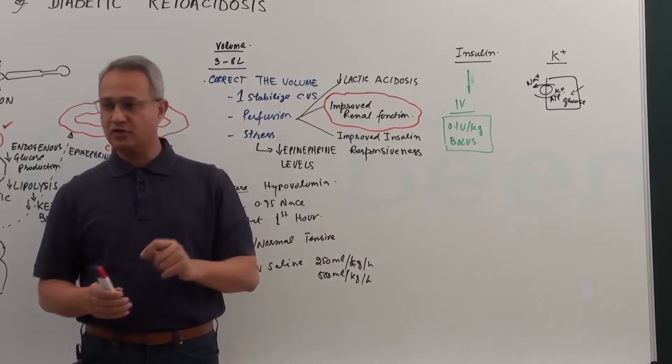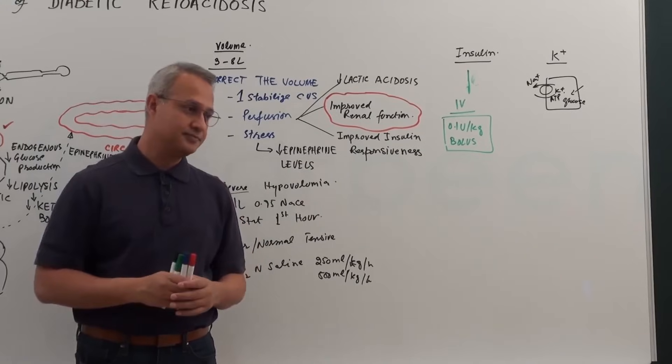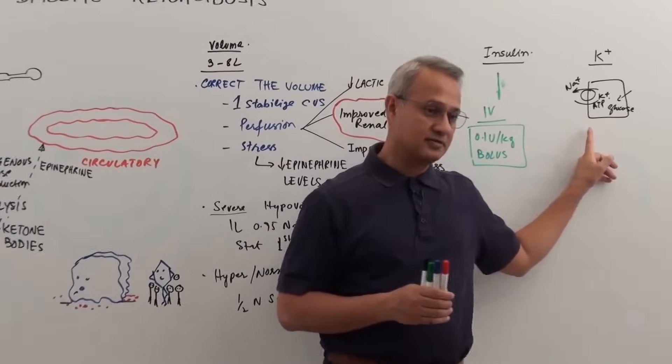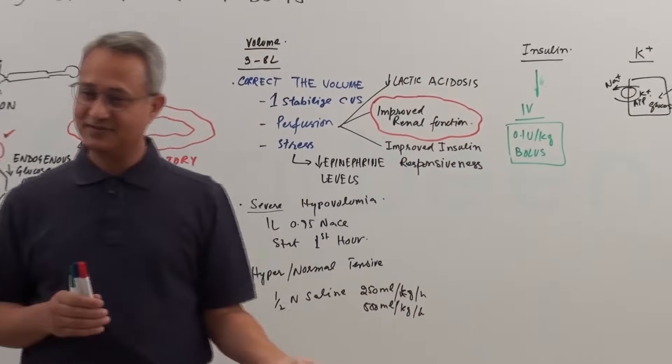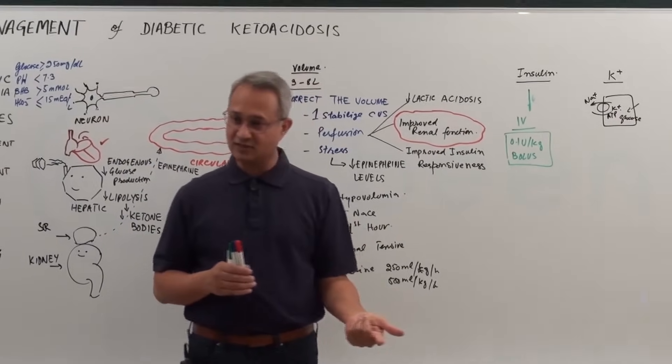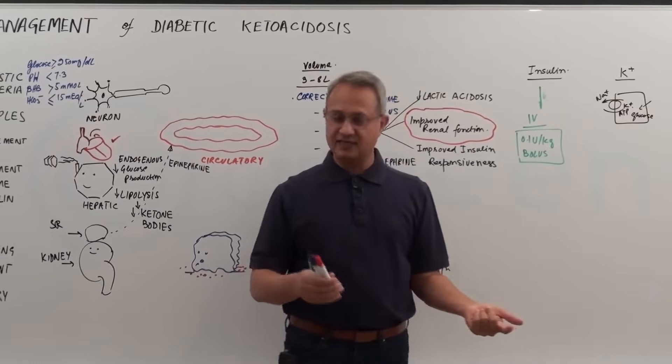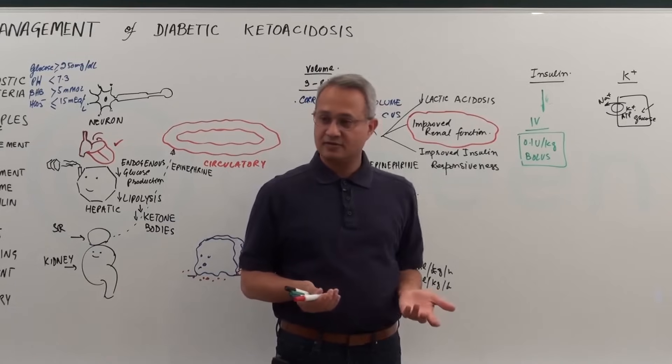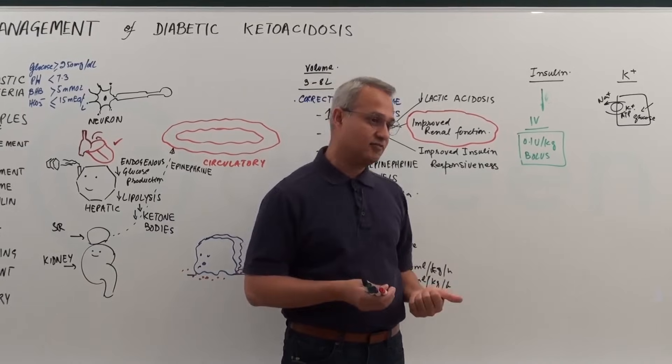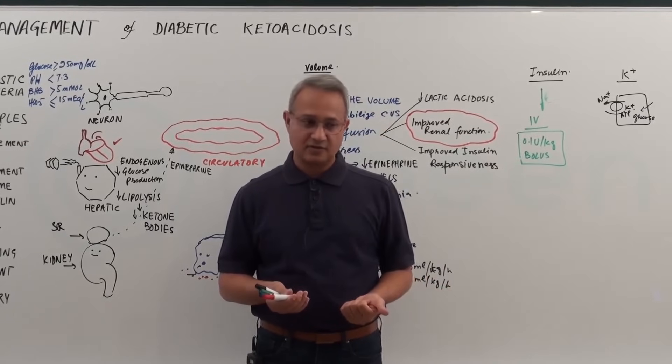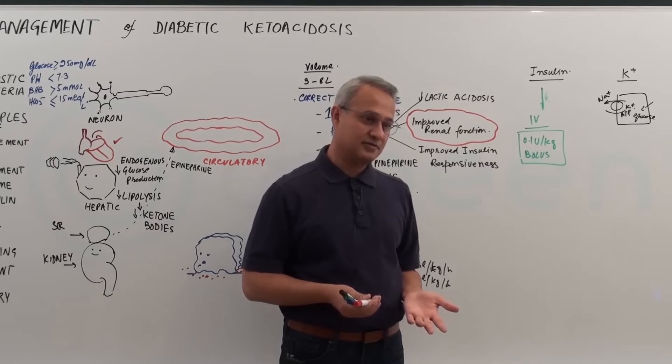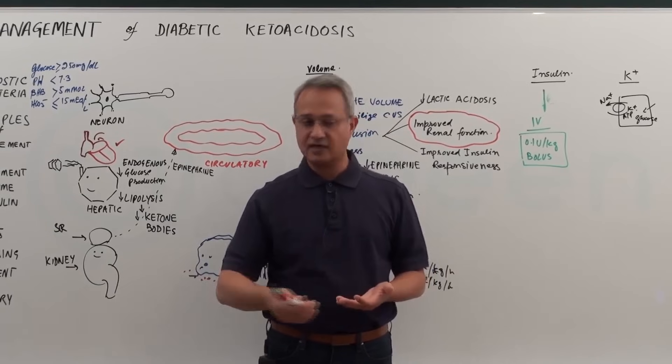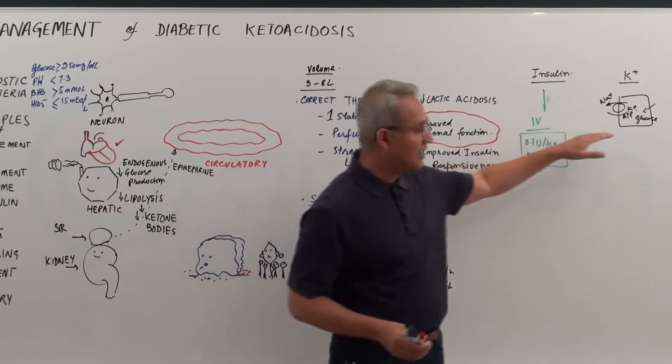What else runs these pumps fast? What else stimulates ATP pumps? Thyroid hormone drives them fast. Sympathetic stimulation drives them fast. There are other factors as well. At this time, we are interested in insulin over here.